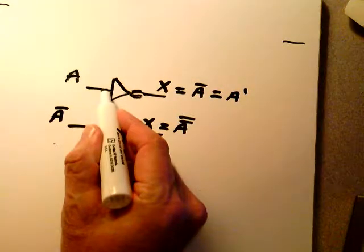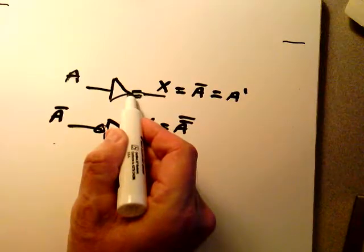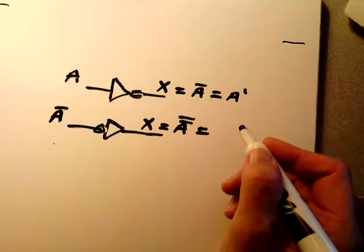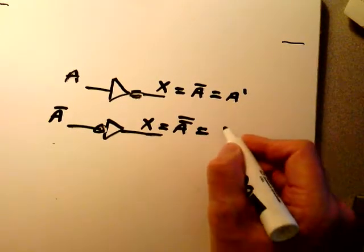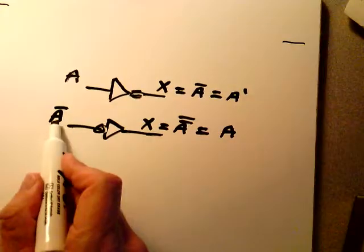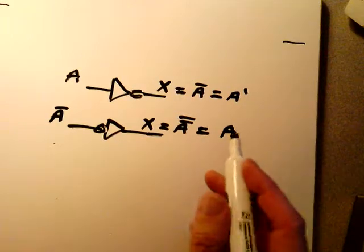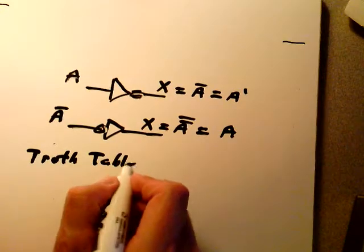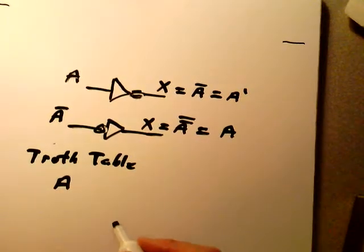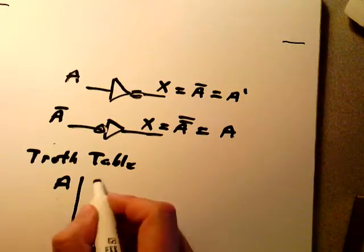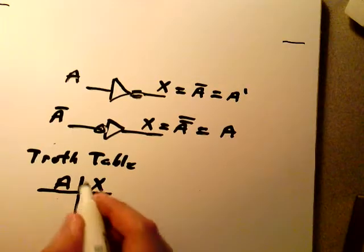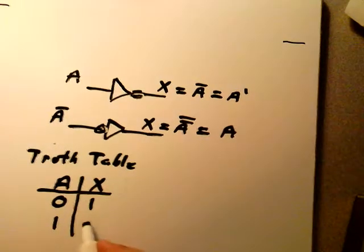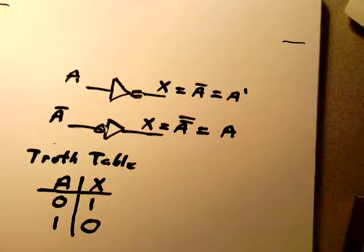A-bar-bar — if you take a look at one of the laws we'll discuss — A-bar-bar is back to A. So if the input is A-bar, the output is A. The truth table for the inverter has one input and one output, separated by a vertical line. Input zero gives an output of one; input one gives an output of zero. That's the truth table for the inverter.